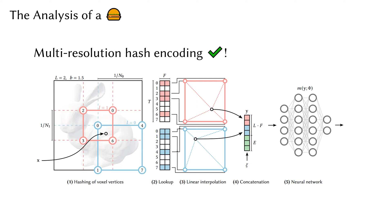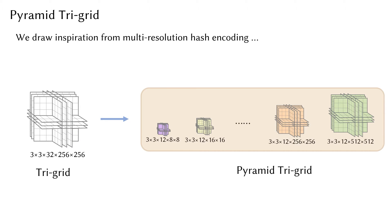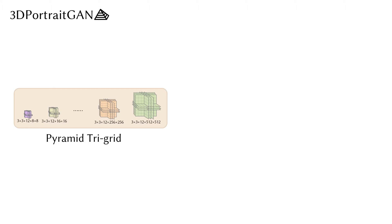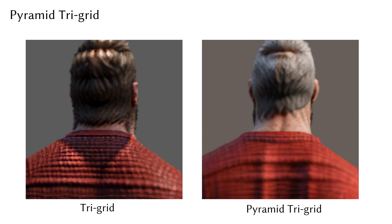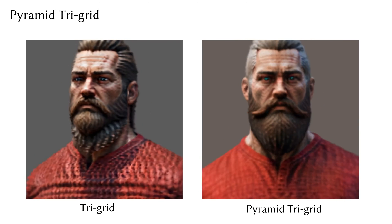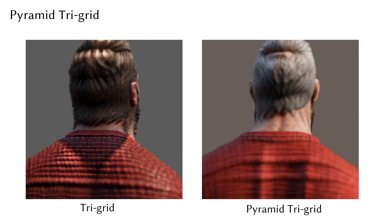Taking inspiration from the multi-resolution hash encoding, we introduce a novel 3D representation referred to as the Pyramid TriGrid, which consists of multiple trigrids of different resolutions. We subsequently incorporate the Pyramid TriGrid into 3D Portrait GAN, thereby establishing it as the foundational 3D representation. We refer to this newly developed 3D Portrait Generator as 3D Portrait GAN Pyramid. Using our Pyramid TriGrid delivers a smoother, more realistic rendering with significantly reduced noise.